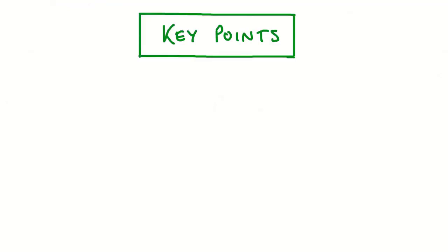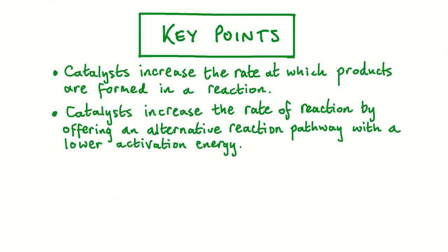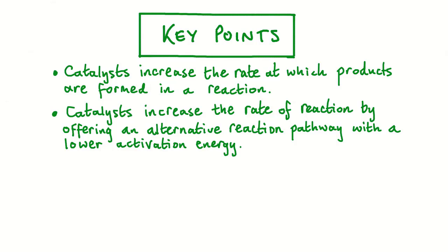To summarize the key points from this lesson: catalysts increase the rate at which products are formed in a chemical reaction. Catalysts increase the rate of reaction by offering an alternative reaction pathway with a lower activation energy. Catalysts are not consumed in the reaction, and catalysts save time and money in industrial reactions.